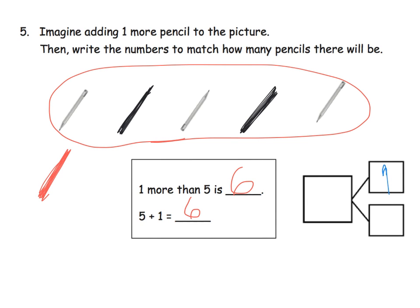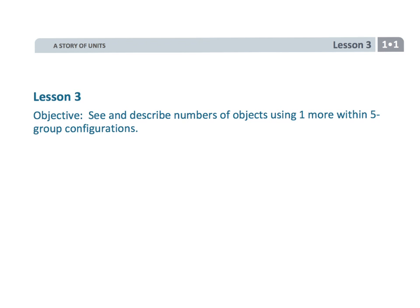So what's our number bond going to look like? Our number bond is going to look like a one right here, and then five down here, and then our whole is a six. And that wraps up Grade 1 Module 1 Lesson 3 where we are counting and we're doing one more, so things like five plus one equals six.